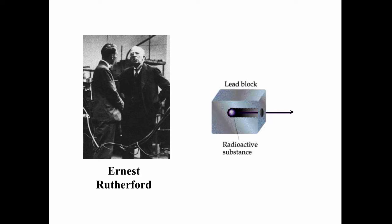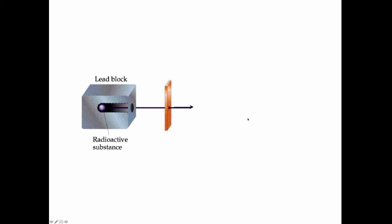Following the discovery of radioactivity, a number of scientists investigated it in more detail, Ernest Rutherford being one who used different radioactive substances encased in a lead block. He tracked the emissions from these radioactive substances, made them into a beam, and had the beam go past some electrically charged plates.